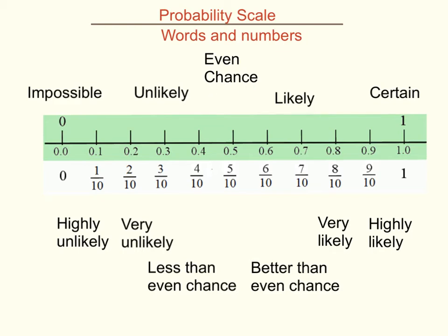Half the time it will happen, half the time it won't. And we've got other words: highly unlikely, very unlikely, unlikely, less than even chance, even chance, better than even chance, likely, very likely, highly likely. These are the words we use to mean the fractions shown on the scale.